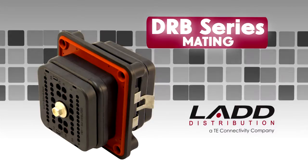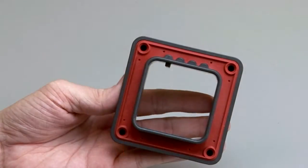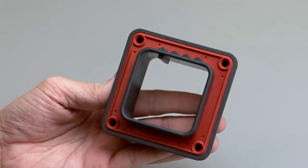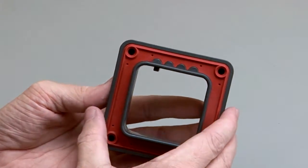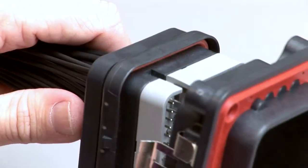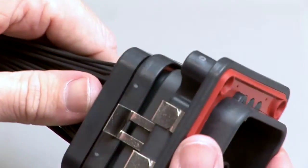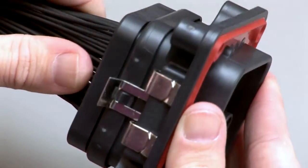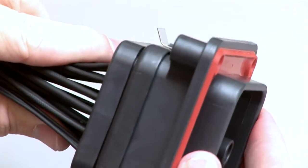DRB mating. A complete DRB assembly requires a mounting flange. Align the keys on the receptacle with the keys on the mounting flange. Insert the receptacle into the mounting flange until you hear and feel the retaining clips click.